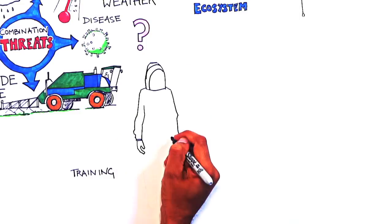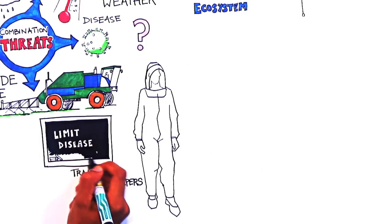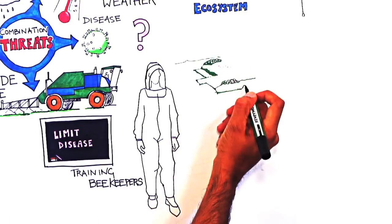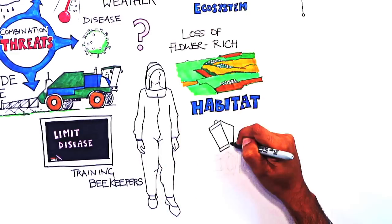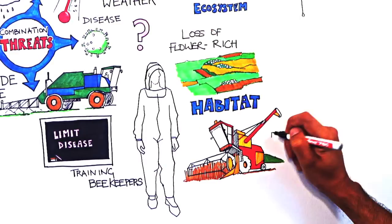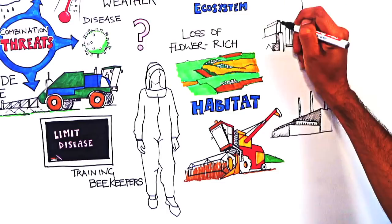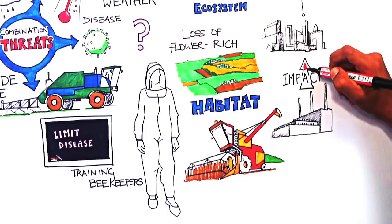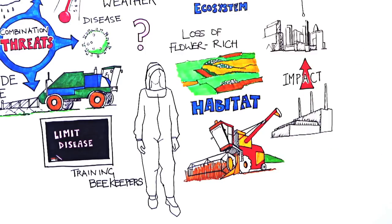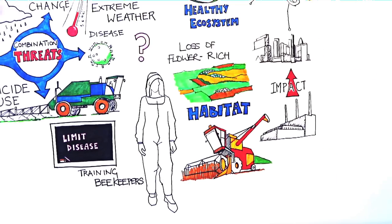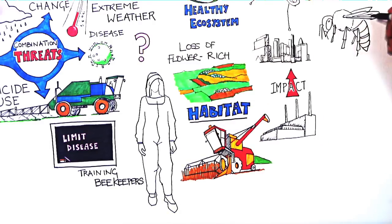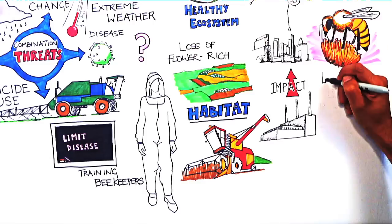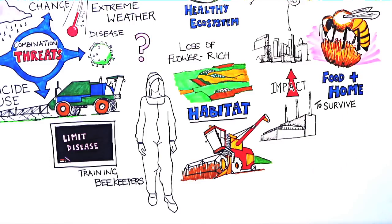Training is already available to help beekeepers limit disease in managed hives, but evidence suggests that loss of flower-rich habitat linked to intensive agriculture, industrialization, and urbanization, increases the impact of all other pressures. Therefore, of all the threats facing wild bees and other pollinators, habitat change is probably the most significant, because bees need food and a home to survive.